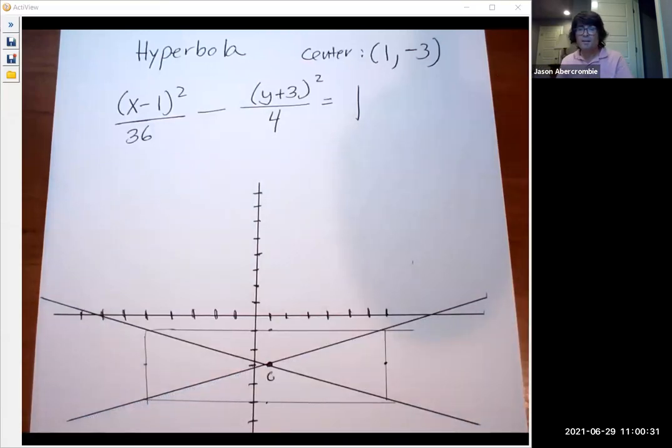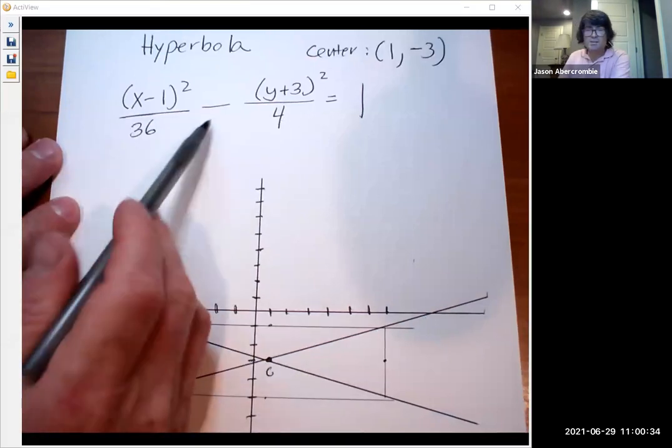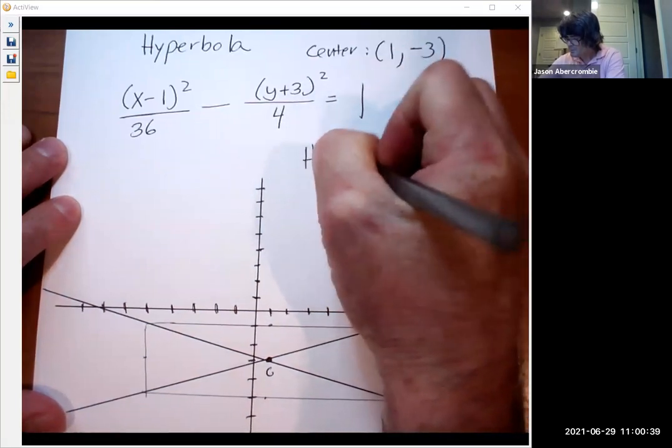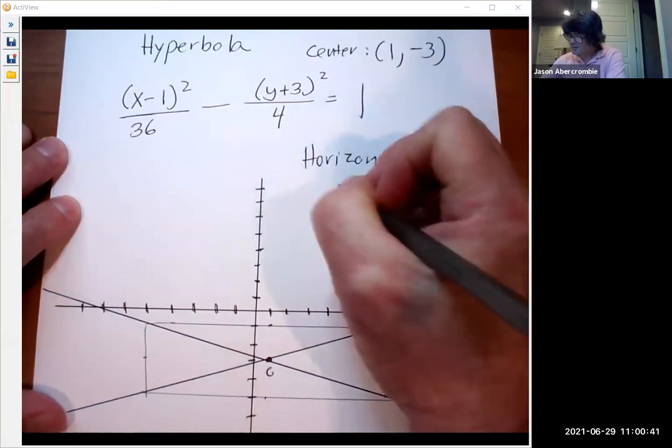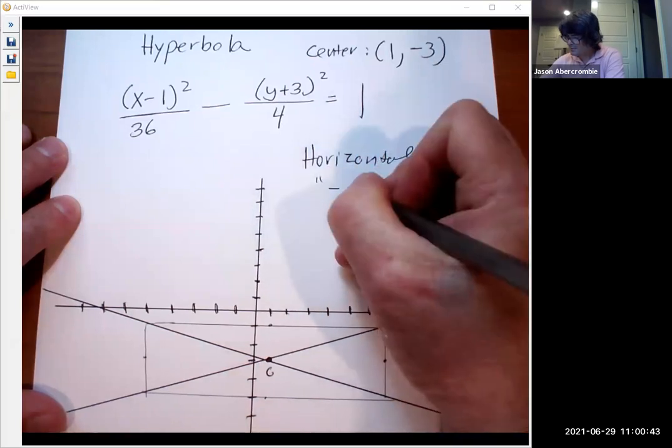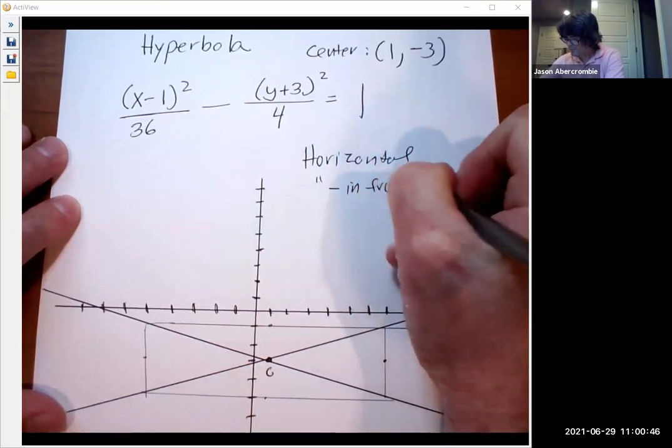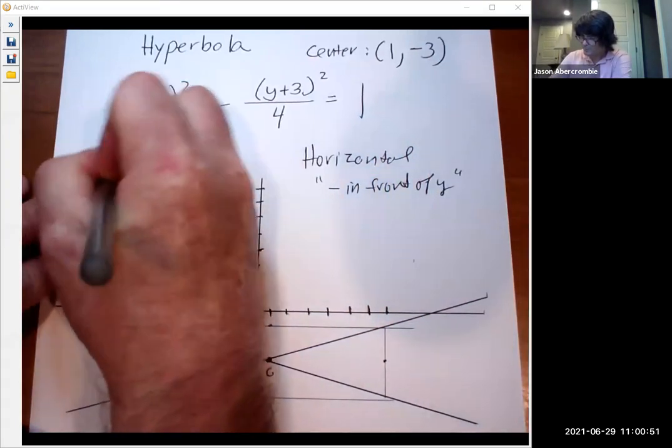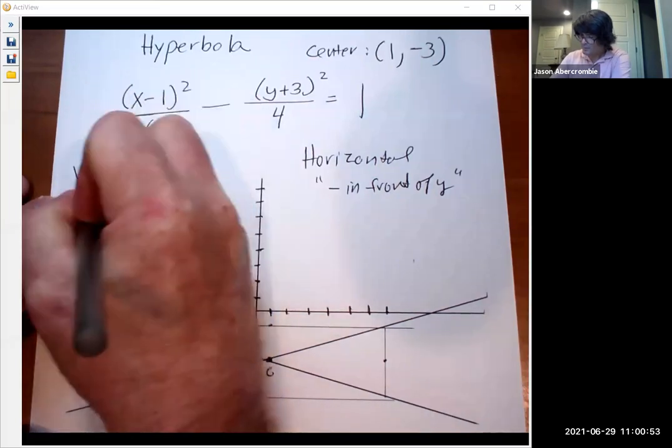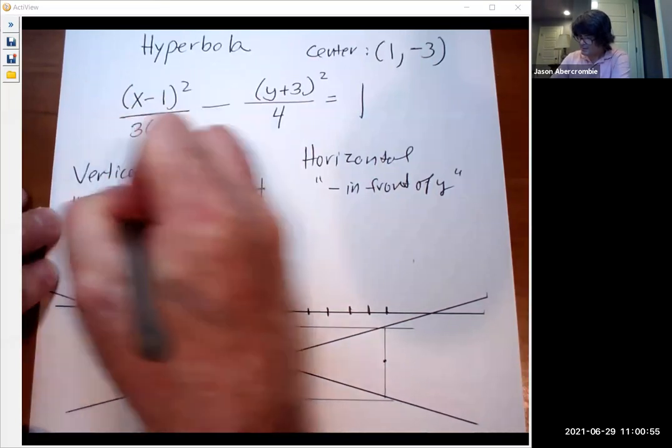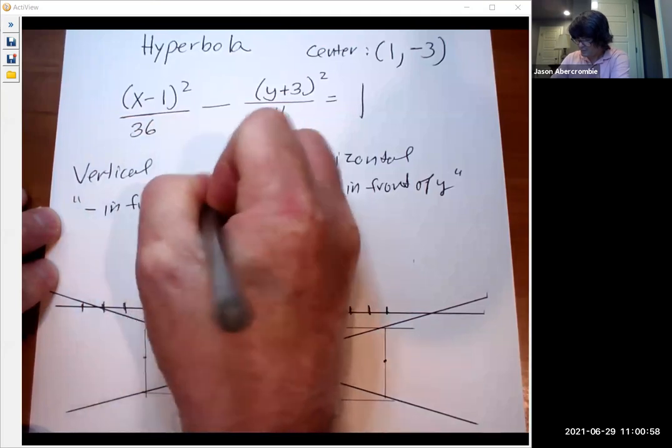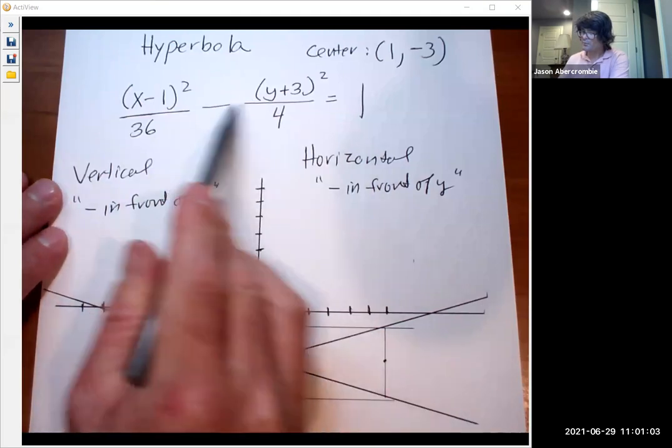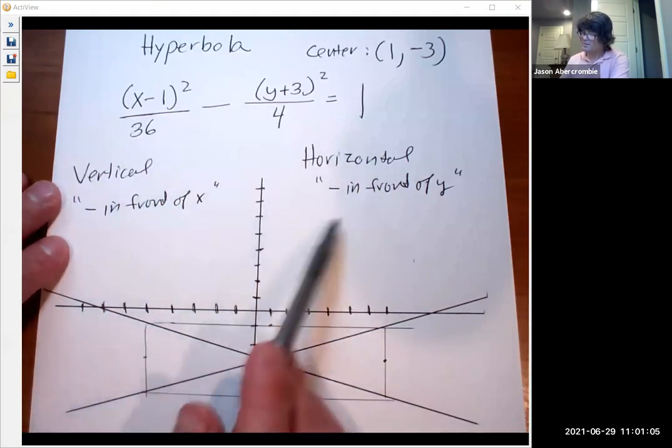And so if the negative is in front of the Y, this is horizontal. Horizontal is a negative in front of Y. And if it's vertical, the negative is in front of the X term. So that's just something you have to memorize, unfortunately. So because the negative is in front of Y, mine is horizontal.